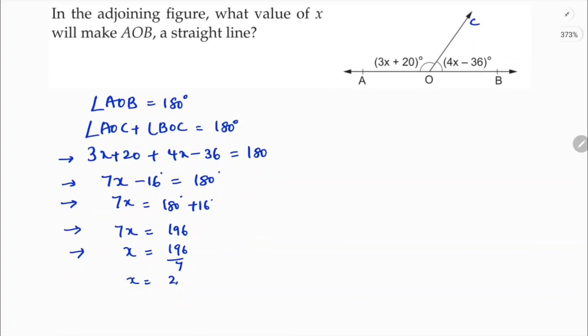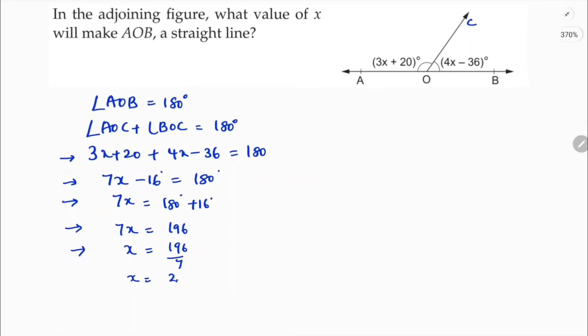7 times 28 is 196, so the x value is 28 degrees. So for the value of x equals 28 degrees, AOB will make a straight line. If you want, you can check.